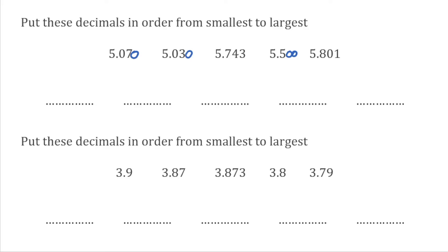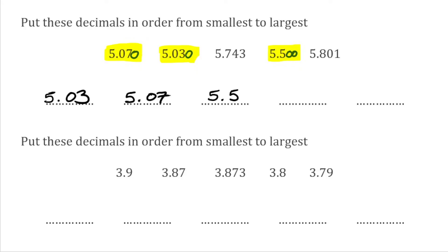The second digit was both 0, so we look at the third digit. For the first one it was a 7, for the second one it was a 3, so we start with 5.030 — we write 5.03. We know the second one is 5.070, so that's 5.07. Now looking at the others, comparing the second digit we've got 7, 5 and 8, so it's the 5 — that's 5.500, so we write 5.5. Comparing the remaining second digits — 7 and 8 — it's the 7, so we've got 5.743. And then finally our 5.801.